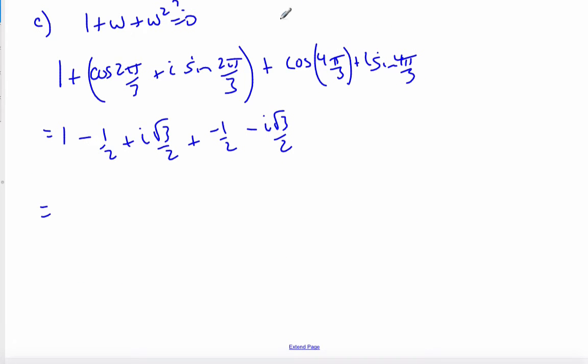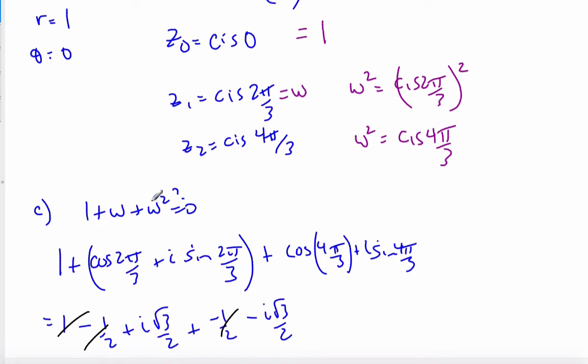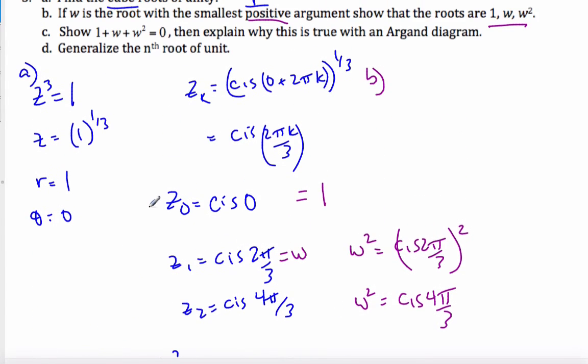Collecting like terms, I can see that 1 minus 1 half minus 1 half is 0. And those two are 0 as well, and so it is 0. Therefore, 1 plus w plus w squared is 0, shown as asked in C part.